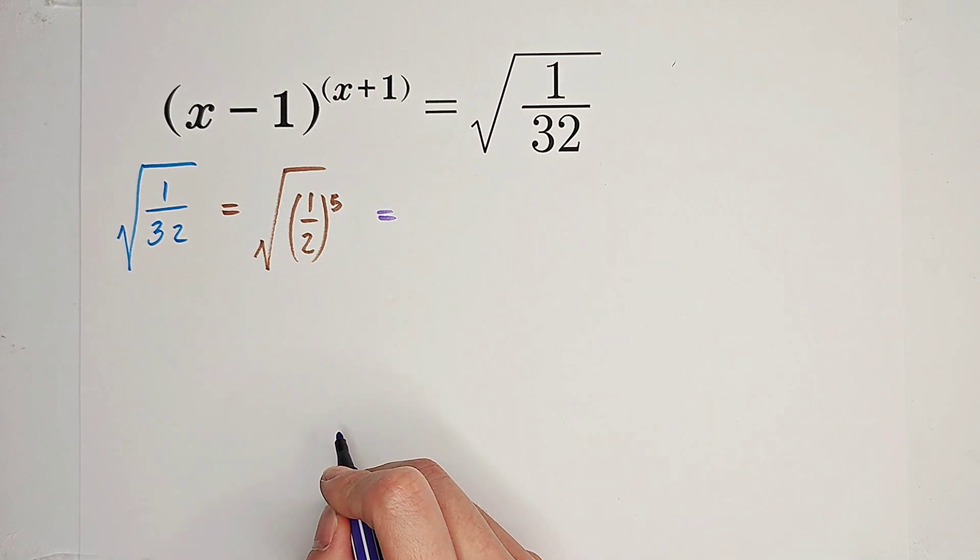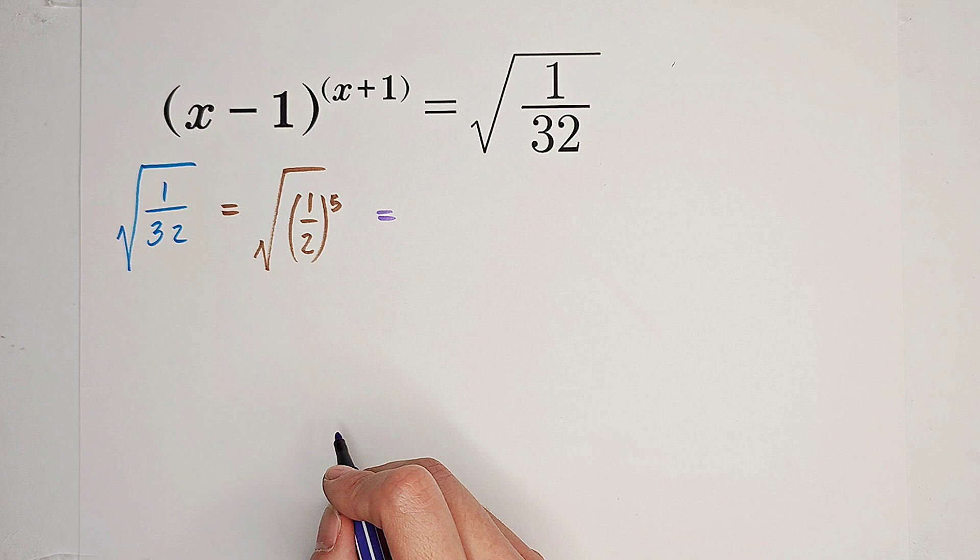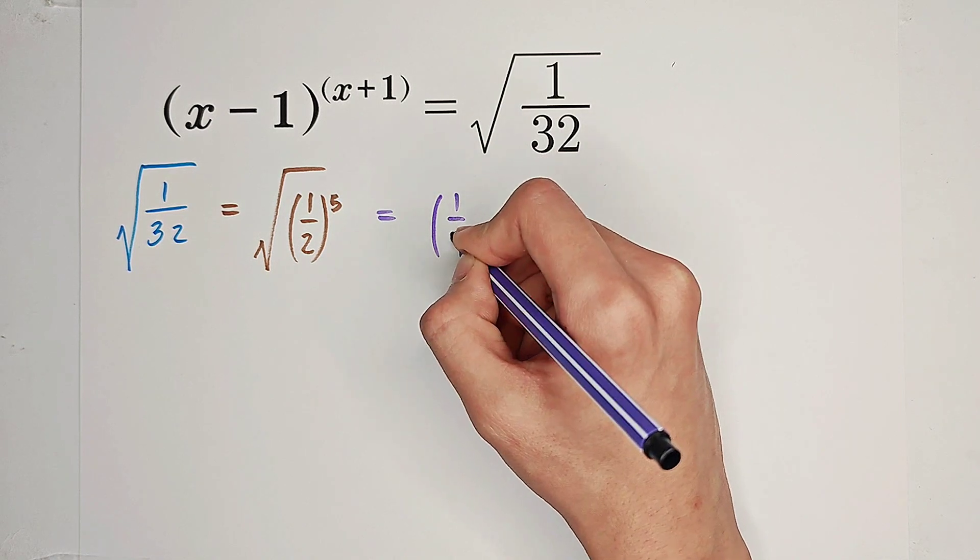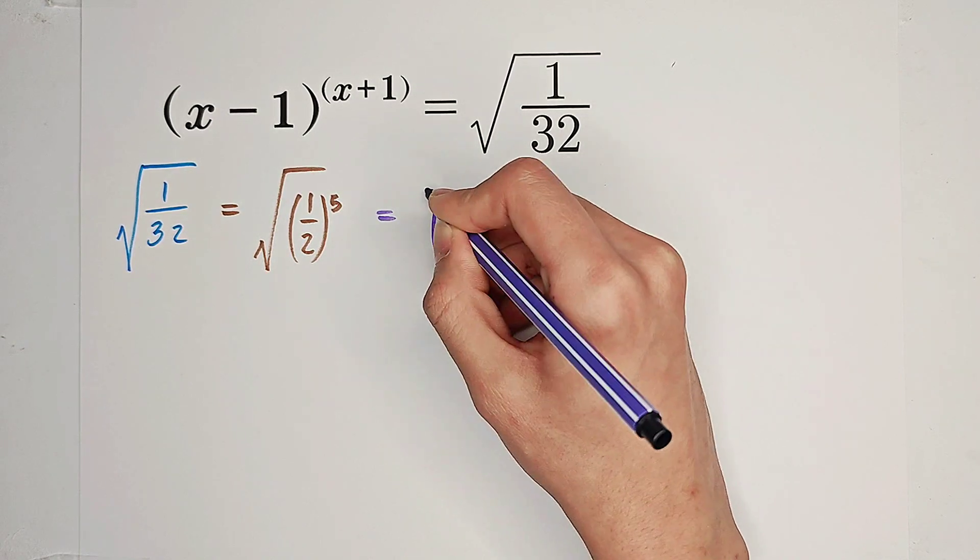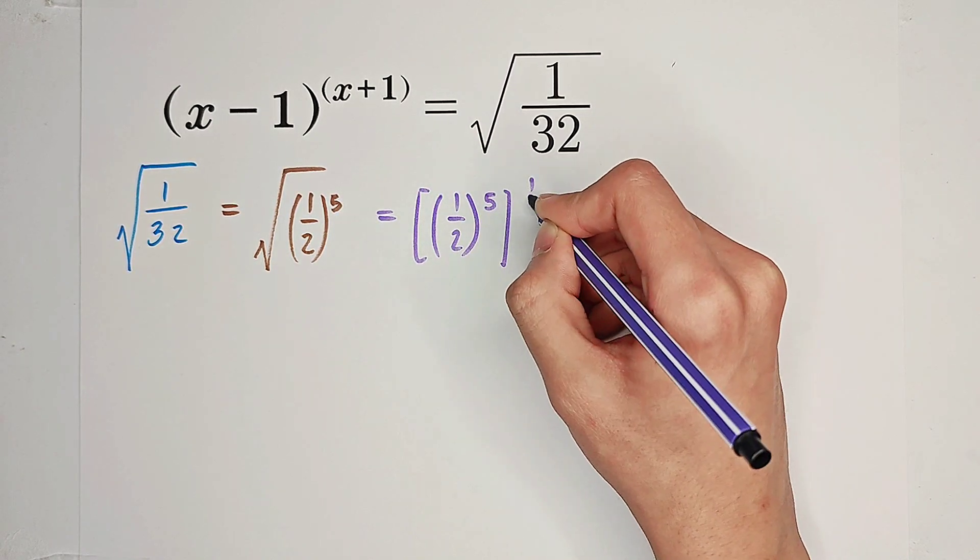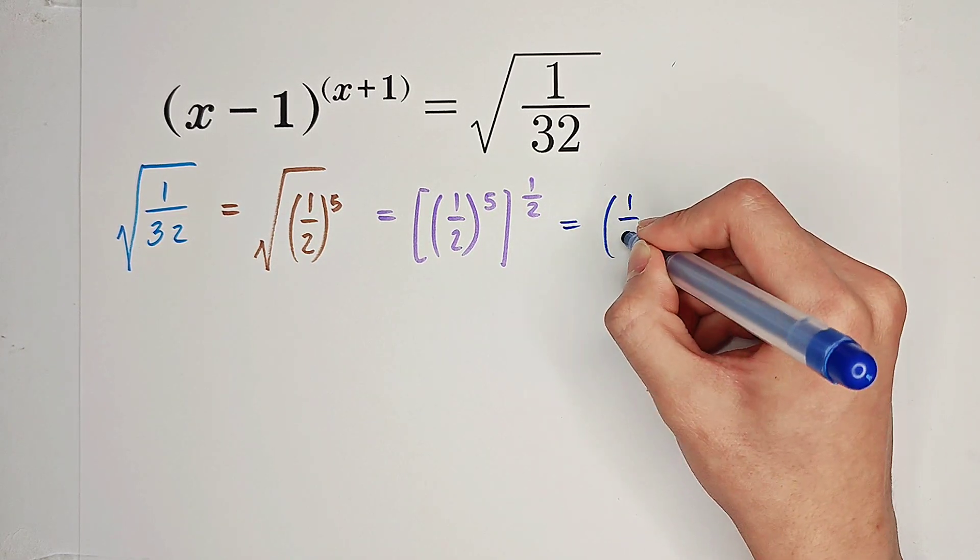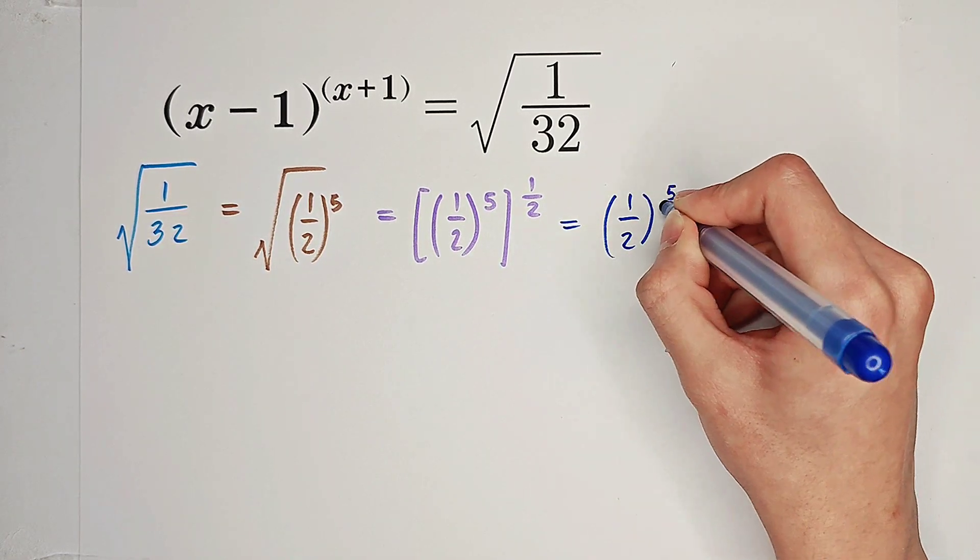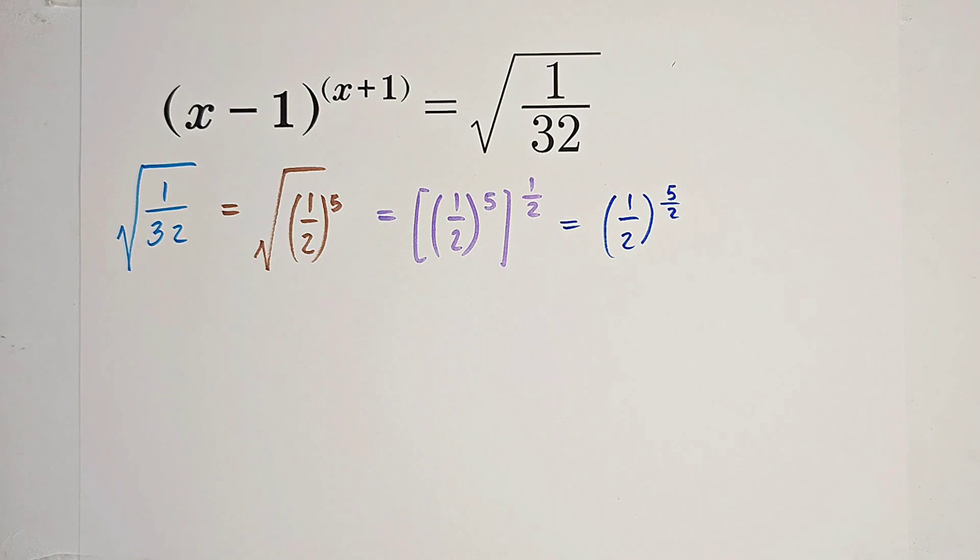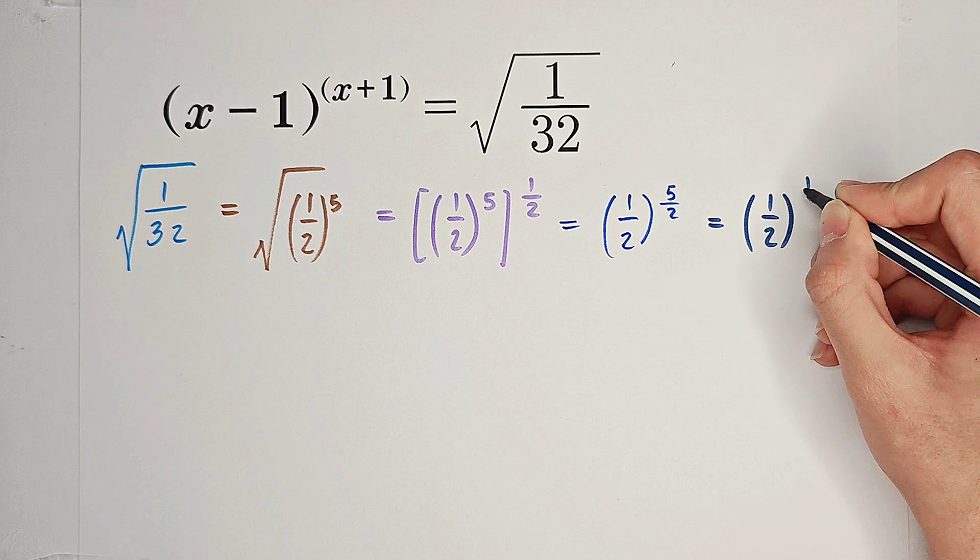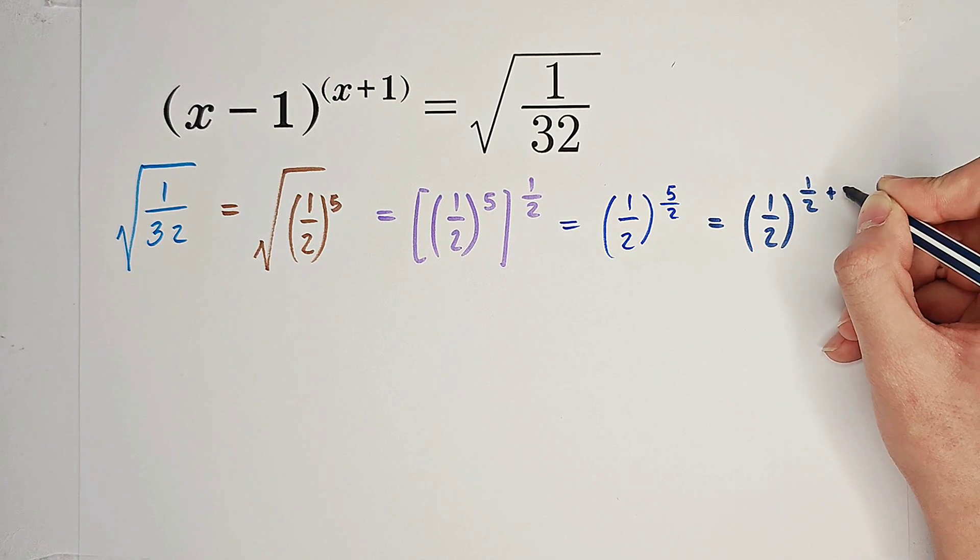Because the square root means raising some number to the power of a half, this is just equal to 1 over 2 all to the power of 5 and then all to the power of 1 over 2. Of course, that is 1 over 2 all to the power of 5 over 2, and this one is 1 over 2 all to the power of 1 over 2 plus 2.